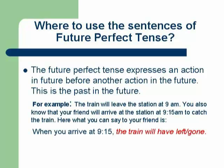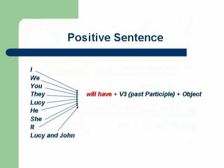When he answers your call, you can say: 'When you arrive at 9:15 a.m., the train will have left' or 'the train will have gone.' The second part — 'the train will have gone' — shows past in the future, because it did not happen in reality; you are making an idea about it. You can guess that this will have happened before another action. So the sentences of future perfect tense express an action in the future before another action in the future.